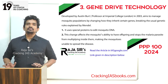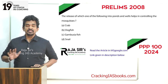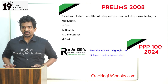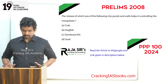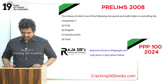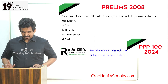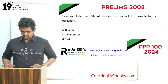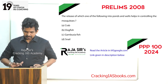Now I am going to relate three previous year questions based on this topic of mosquito control approaches. The first question is: 'The release of which one of the following into ponds and wells helps in controlling mosquitoes?' Option A: Carp. Option B: Dogfish. Option C: Gambusia fish. Option D: Snide. This question was from the 2008 UPSC Prelims question paper.